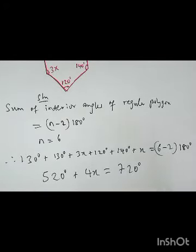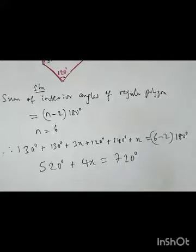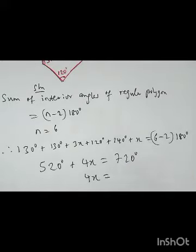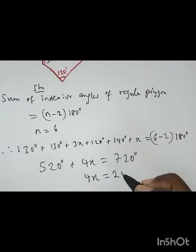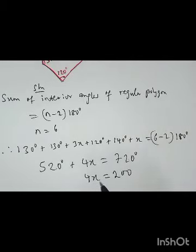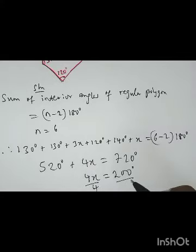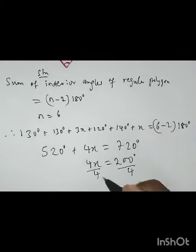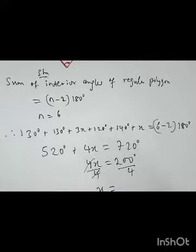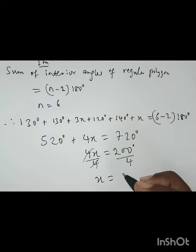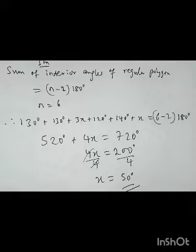Take this to the other side. So you have 4x equals 720 minus 520, which is 200. To find x, divide both sides by 4. So here over 4, here over 4. Therefore, x equals 200 over 4 which is 50 degrees. Thank you.